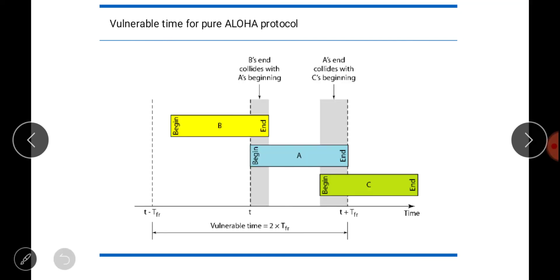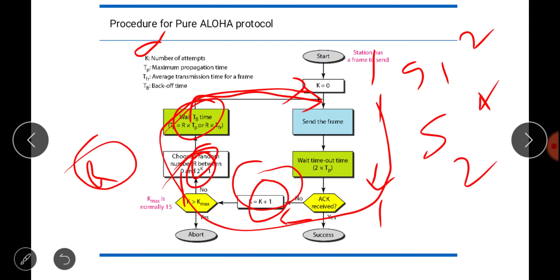The vulnerable time for Pure Aloha is the time during which there is a possibility of collision. We calculate it based on transmission time. If one station starts sending at time t, the frame covers the channel from t−tfr to t+tfr, where tfr is the average transmission time.